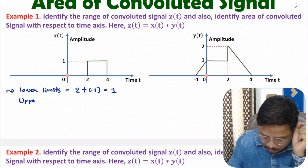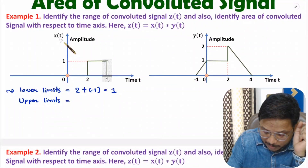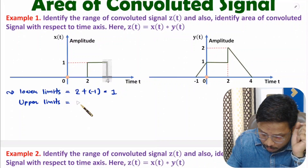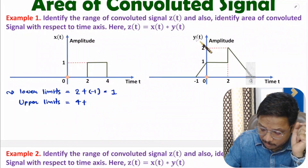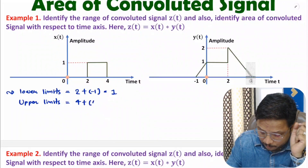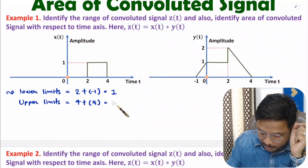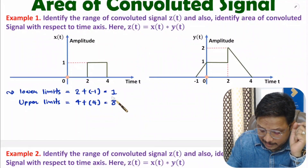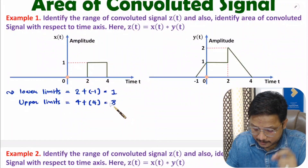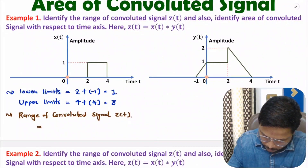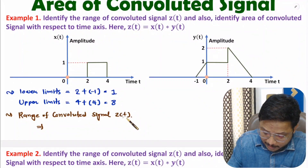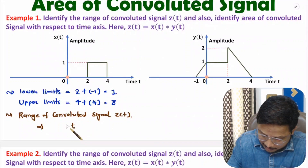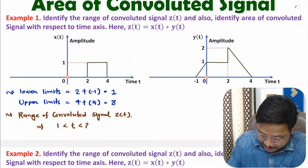For the upper limit: the upper limit of X(t) is 4, plus the upper limit of Y(t) which is also 4. So the total upper limit is 4 plus 4, that is 8. So the range of the convoluted signal is between 1 to 8 seconds. Z(t) ranges from 1 to 8 seconds.